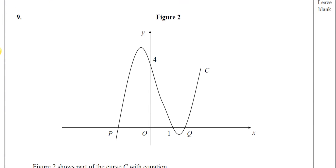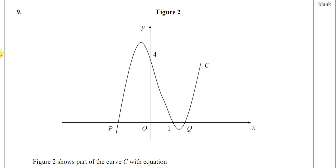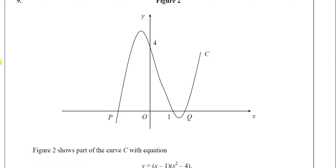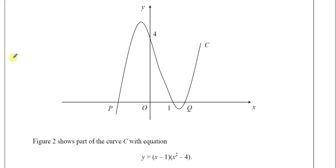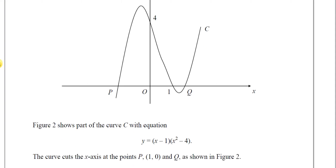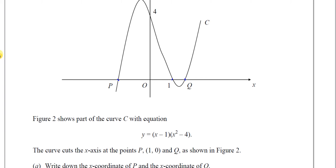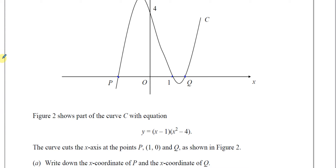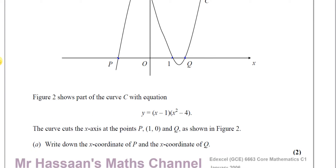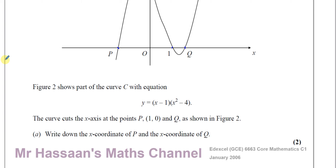So we'll start off with 9A. It says figure two shows part of the curve C, which has the equation y equals x minus one times x squared minus four. It tells us that the curve cuts the x-axis at the points P, (1,0), and Q. So we know this point is (1,0) but we don't know the coordinates of P and Q — it's not given explicitly. We're asked to write down the x-coordinate of P and the x-coordinate of Q. This is worth two marks — it says 'write down,' something you can almost do visually.